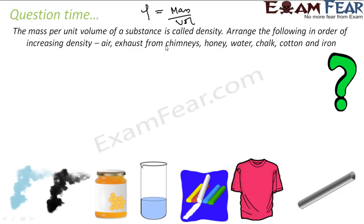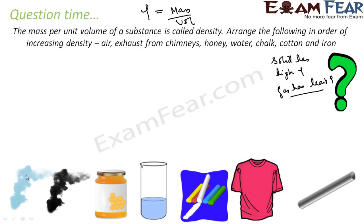Arrange the following in increasing order of density. We know that solids have high density and gases have the least density. Why? Because in gas, the space between particles is pretty high, so the volume is very high. If mass is constant and volume increases, density becomes very low — because you are increasing the denominator, the value decreases. So solid has high density and gas has low density.